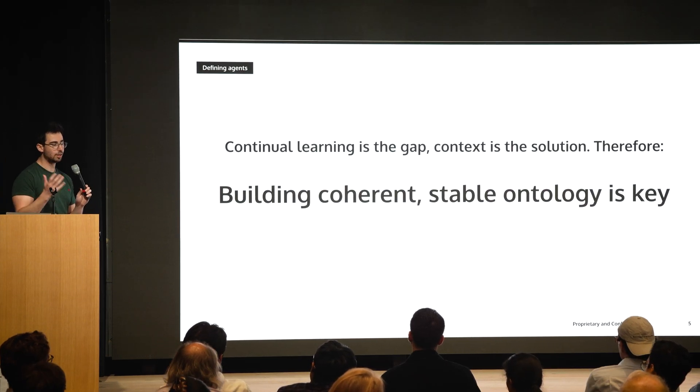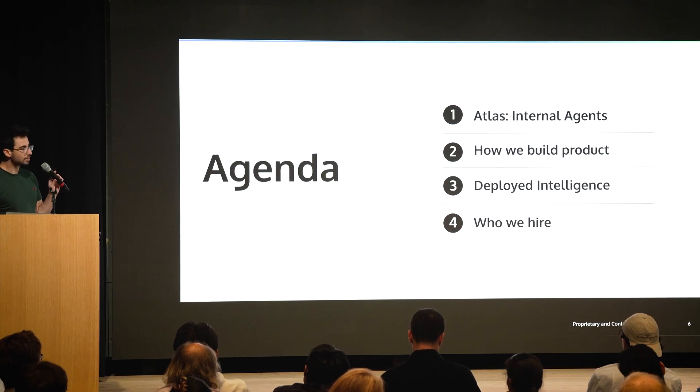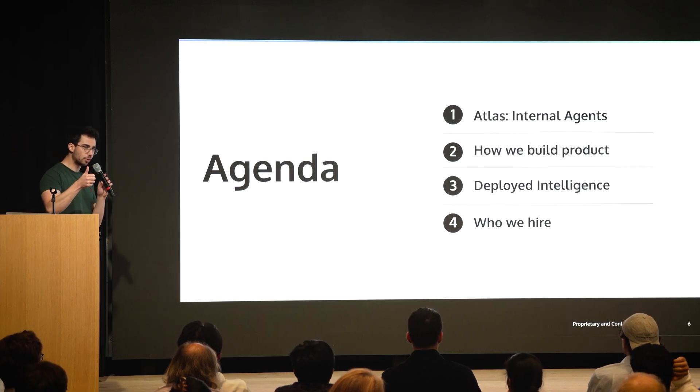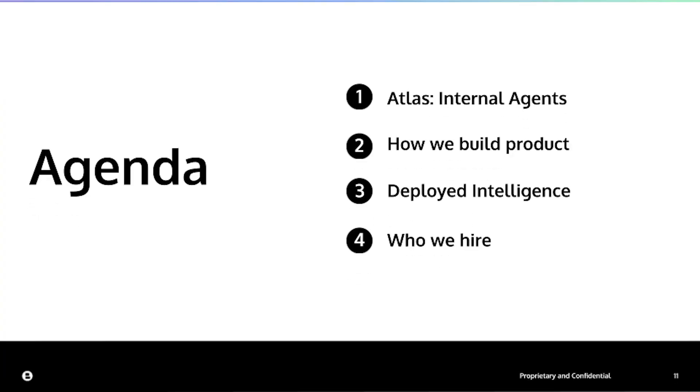Humans have this memory system — we don't know exactly how it works, but sleep has a lot to do with it. You essentially compress memories down. There's a reason you can't remember much from when you were five, but you can remember a decent amount from yesterday — evolutionary systems told us yesterday is more important. That's a memory compression system. Agents don't have that, not anywhere close to human level. I'm going to quickly go through three things: internal agents and how we do it, how we build product, and how we deploy the intelligence externally — all of which go back to the same pattern of cohesive ontology for agents to interact.